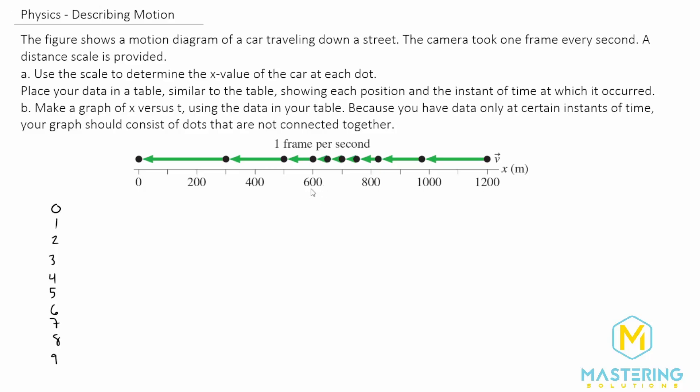Welcome to Mastering Solutions. In this describing motion problem, they want us to go from this motion diagram here and to get all the information from it and put it into a table, and then they want us to use that information to make a graph, a position versus time graph, or x versus t graph from the table.